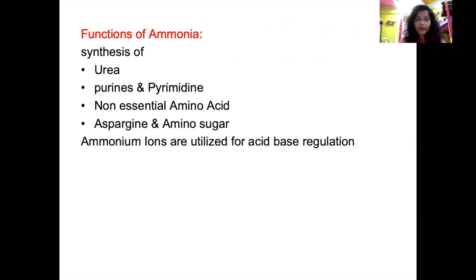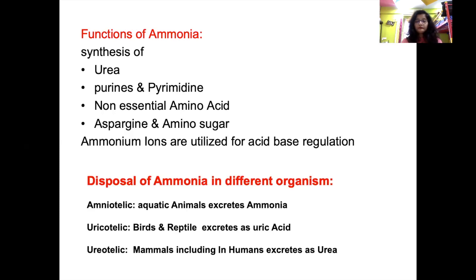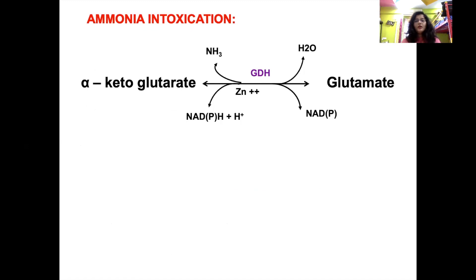The functions of ammonia include: helping in synthesis of urea; nitrogen atoms of purines and pyrimidines are derived from ammonia; it takes part in formation of non-essential amino acids; synthesis of asparagine and other amino sugars are derived from ammonia; and ammonium ions are utilized for acid-base regulation in the kidney. Regarding disposal in different organisms: aquatic animals are ammonotelic and excrete ammonia directly; birds and reptiles are uricotelic and convert ammonia to uric acid; humans and other mammals are ureotelic and excrete ammonia as urea.